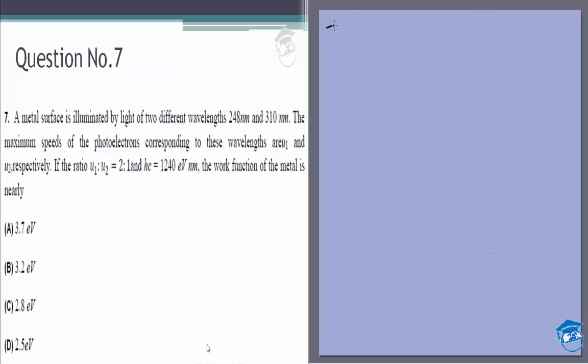Let's do question 7. A metal surface is illuminated by light of two different wavelengths, and the maximum speeds of photoelectrons are U1 and U2. U1 by U2 is given to be 2 by 1, or 2. U is the maximum speed.